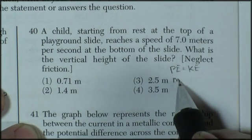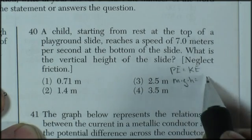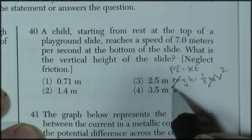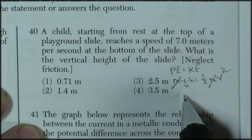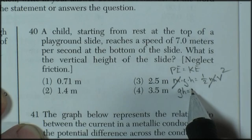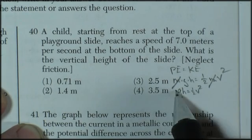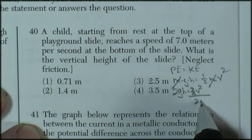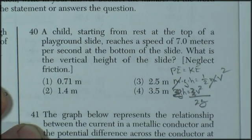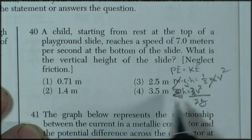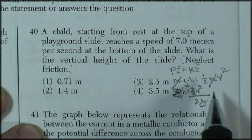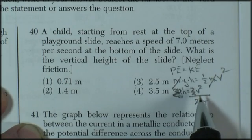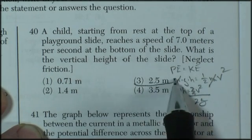Potential energy at the top is m times g times h. Kinetic energy is 1/2 mv squared. I can get rid of my m's, and so I can say that gh is equal to 1/2 v squared. 2gh is equal to v squared. And v squared divided by 2g is equal to h. So I'm going to use that equation. Let's see, 7 squared is 49. 49 divided by, let's say, 20 would be equal to 2 and change. And so I'm going to say that my answer is that.